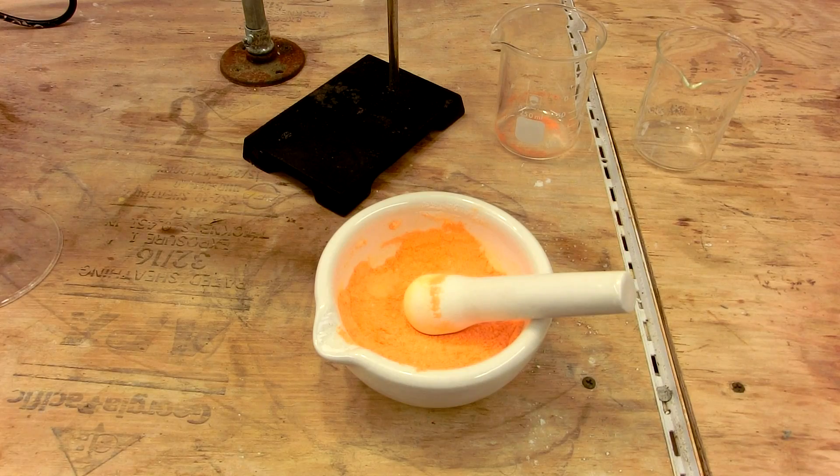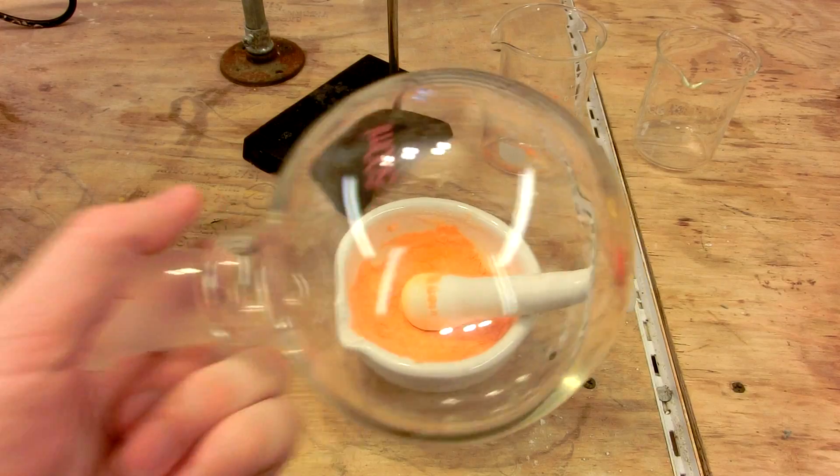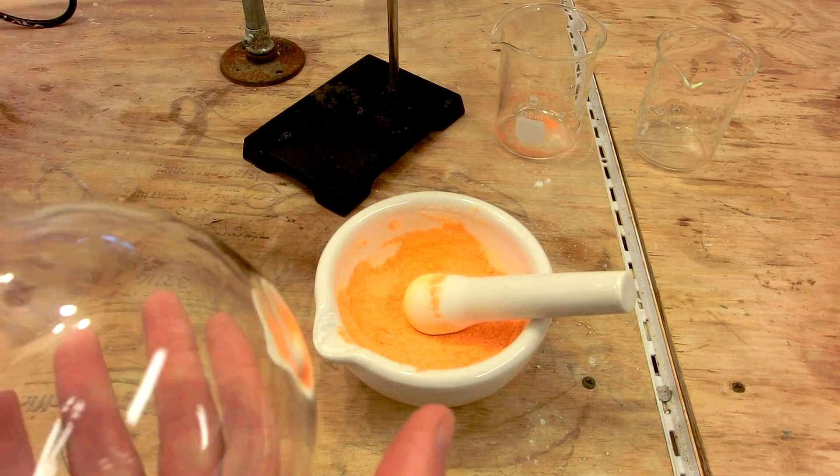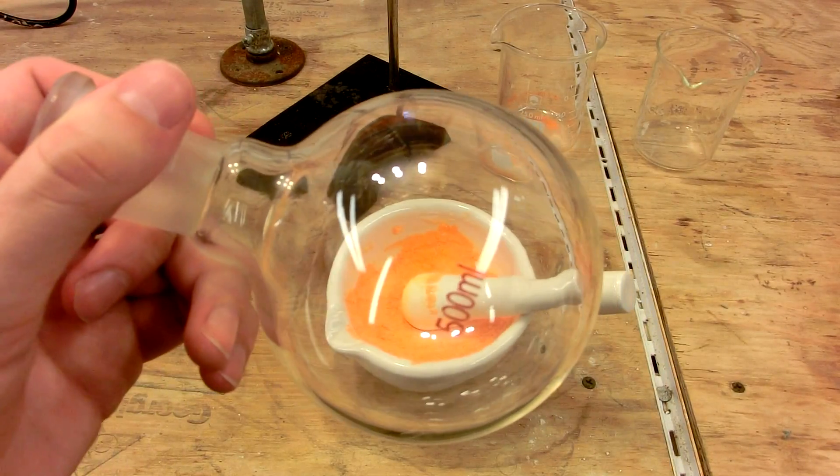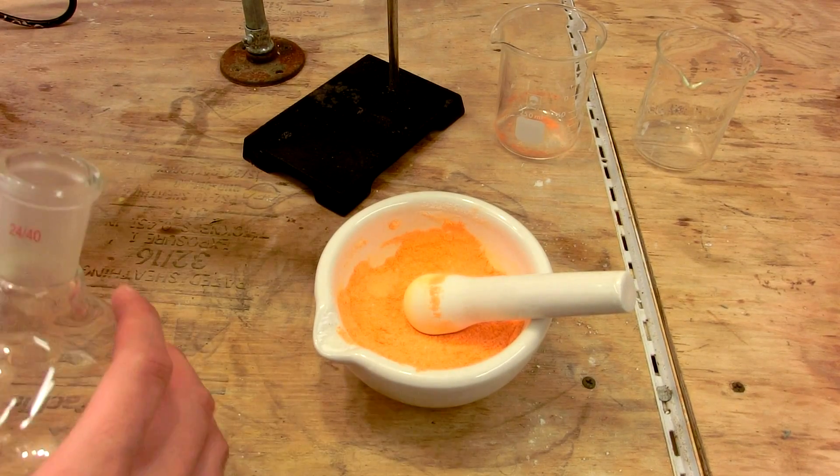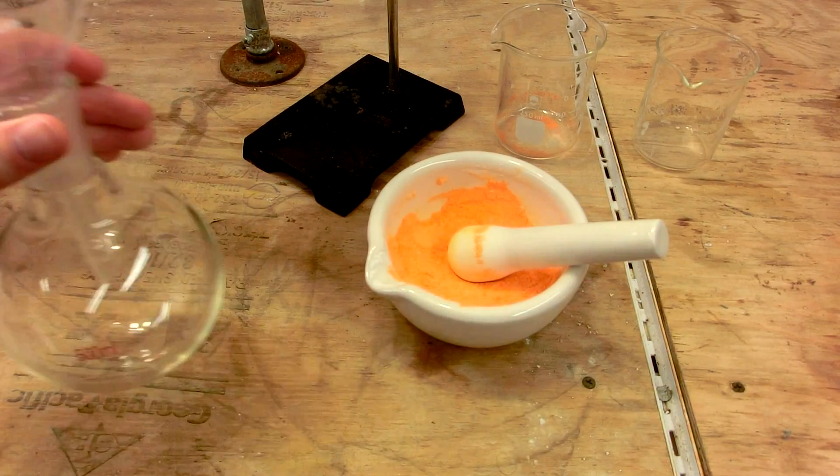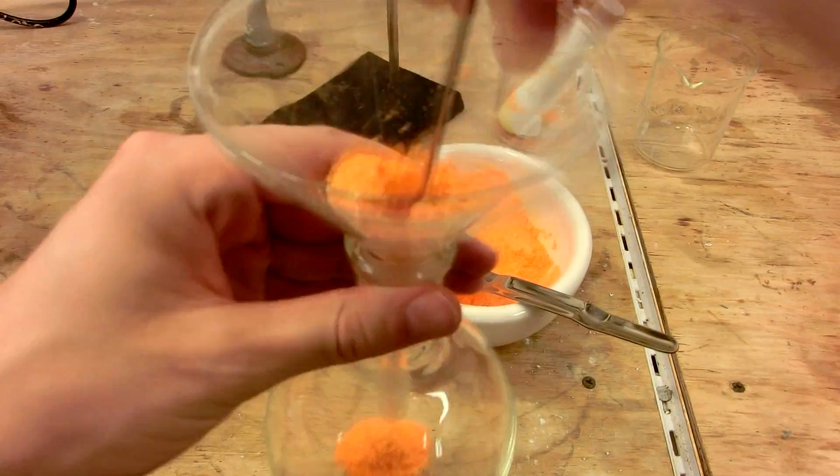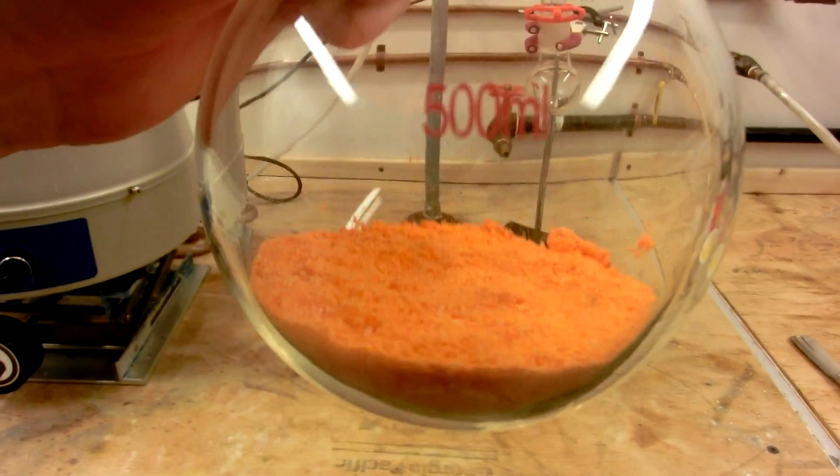When the reactants are fully homogenized, transfer them to a clean, dry, 500 milliliter round bottom flask that is free of organic contaminants. It's important that the whole setup is completely free of organic contaminants, because chromal chloride is a very strong oxidizer and reacts very violently with many organic compounds.